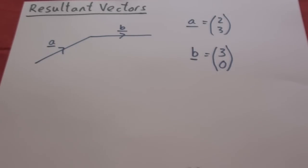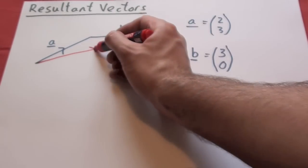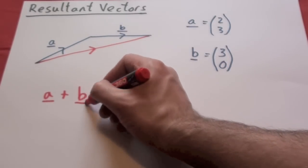Resultant vectors are where you're basically adding vector A and B. You're going from the beginning of A to the end of B. Vector A is 2, 3. Vector B is 3, 0 and we're going to be going from point A to point B.